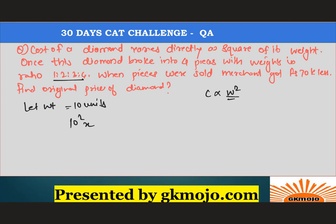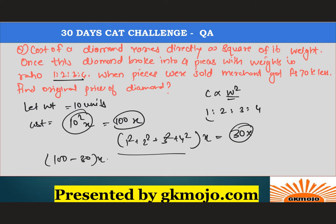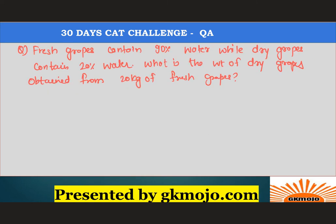We introduce a constant x, so cost equals 100x. After the diamond breaks in ratio 1:2:3:4, the total cost of the pieces is (1² + 2² + 3² + 4²) multiplied by x, which equals 30x. The difference is 100x minus 30x equals 70x, and this equals 70,000. So x equals 1,000, and the original price is 100 multiplied by 1,000 equals 1 lakh. That is the correct answer.